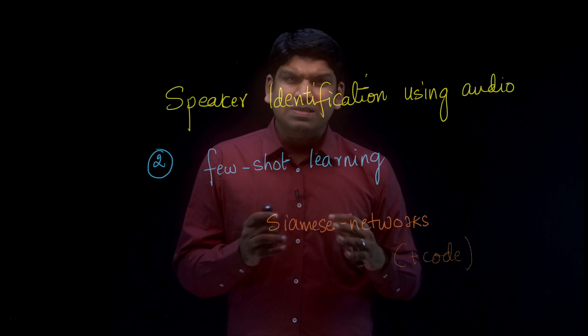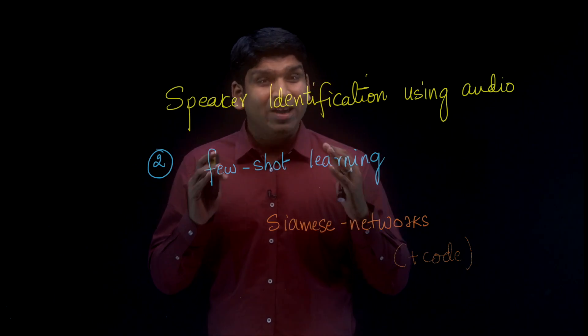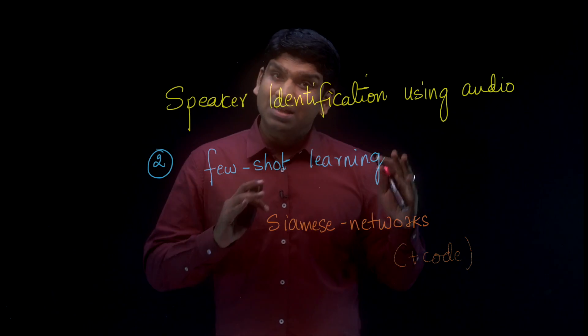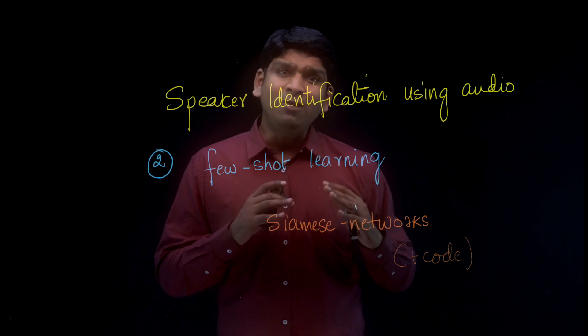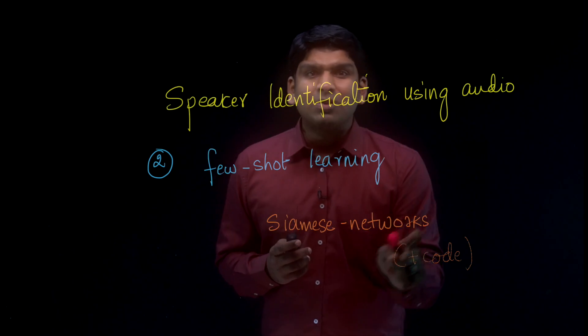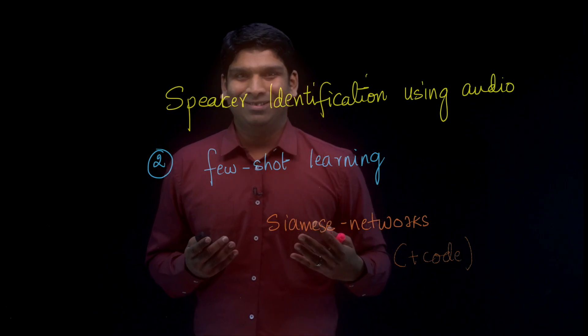We'll learn about few-shot learning and one of the simplest algorithms for it called Siamese networks. It's a very ingenious and cool idea — extremely useful when you have small amounts of data and want to train a deep neural network with just few data points. Siamese networks is a slightly older concept, about four or five years old, but it's very simple, easy to understand, and gives very good results. I'll give you some code snippets to work with. Looking forward to having all of you in this live session — please revise your concepts of convolutional neural networks, especially transfer learning. See you this coming Sunday at 10 in the morning.